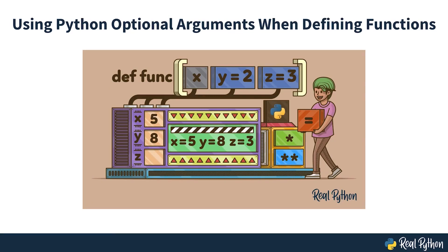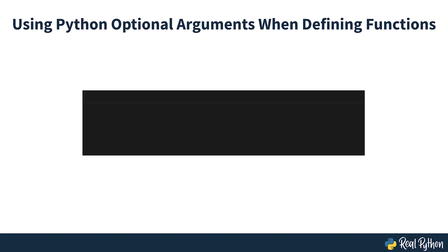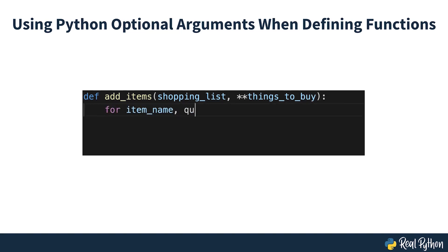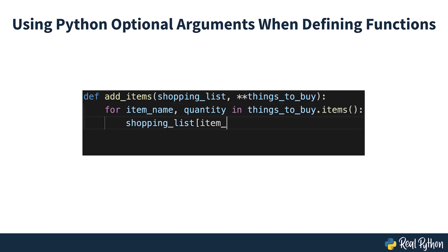Using Python Optional Arguments When Defining Functions. Defining your own functions is an essential skill for writing clean and effective code. In this course, you'll explore the techniques you have available for defining Python functions that take optional arguments. When you master Python optional arguments, you'll be able to define functions that are more powerful and more flexible.